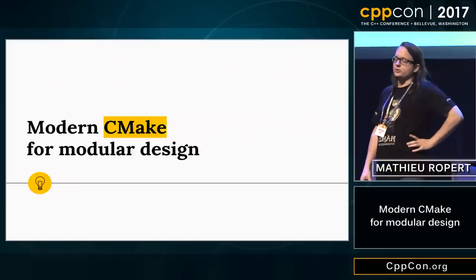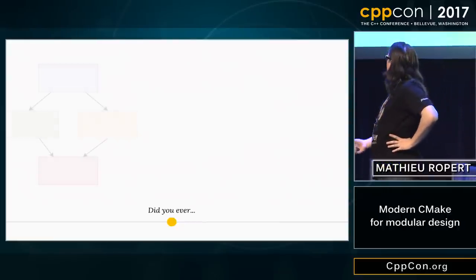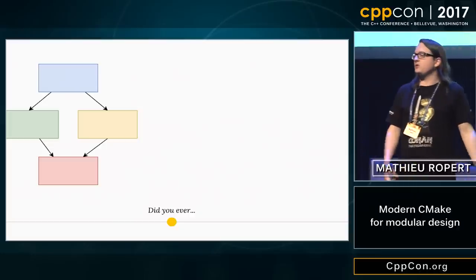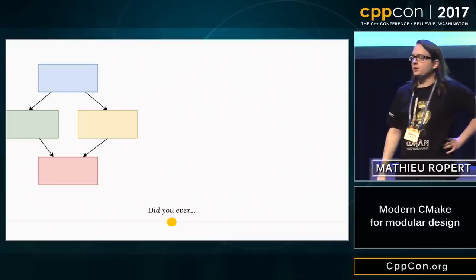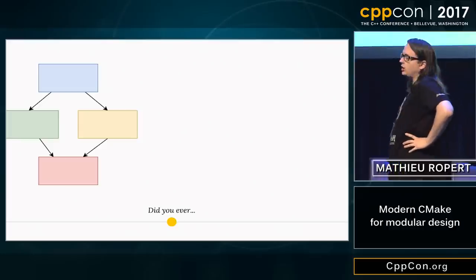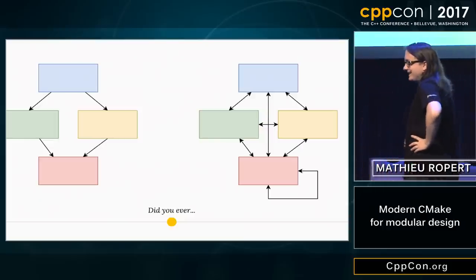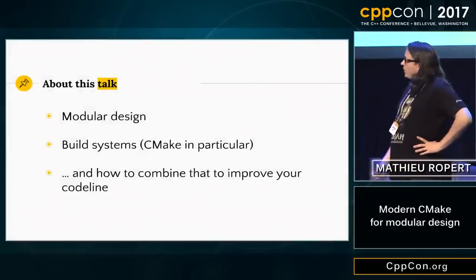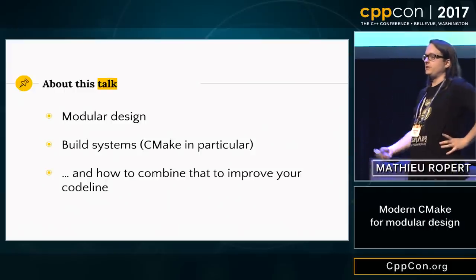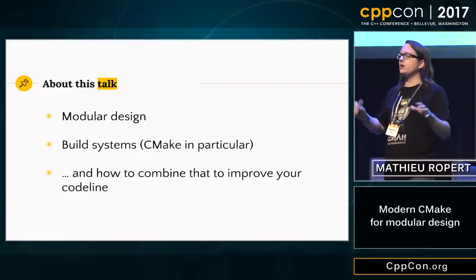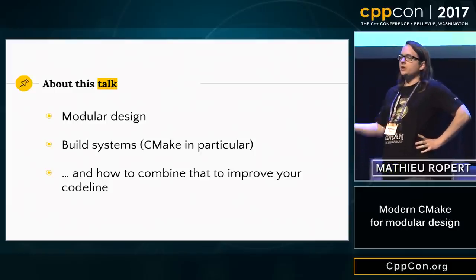I started working with that for some years, and I discovered that it can have some purpose. Did you ever start with a small application where the dependency graph looked very simple — four leaves and a simple diamond pattern — and then after a few months or years you get something much more complex? We are going to see the theory behind modular design, the idea that you should keep a clean dependency graph and a clear code architecture, and how we can integrate CMake into that.